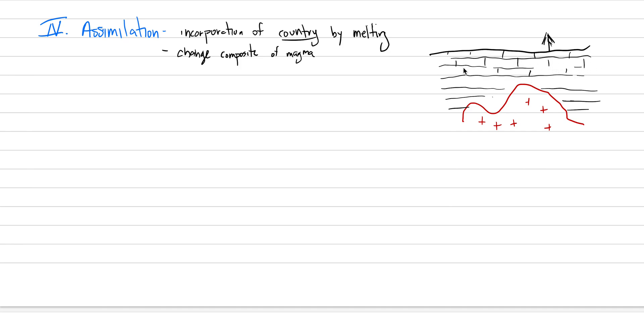This is going to be sedimentary rock that the magma chamber is intruding into. Let's give it the pattern of a limestone, which is that brick pattern. Take your time, make it look real clean. This is the pattern for a limestone, composed of calcite with the chemical formula CaCO3.